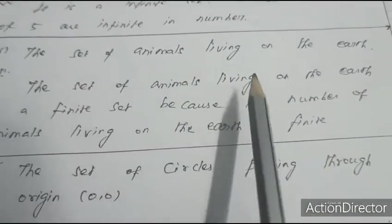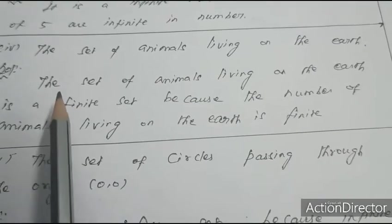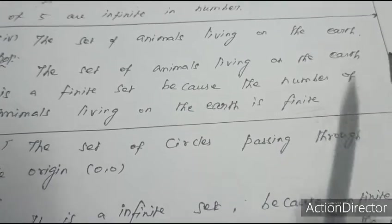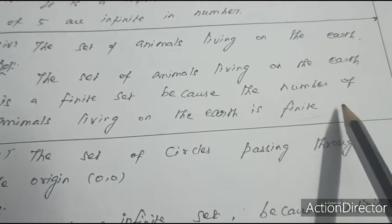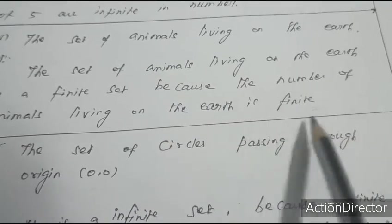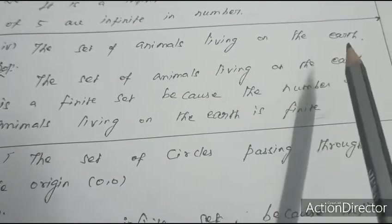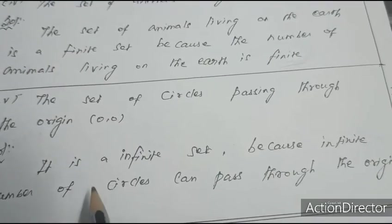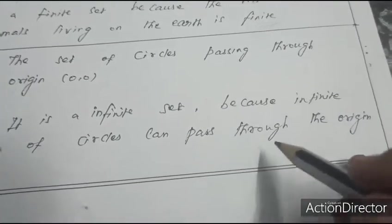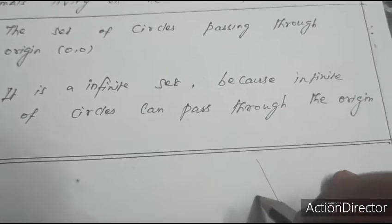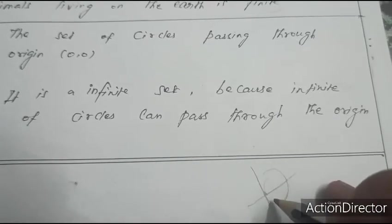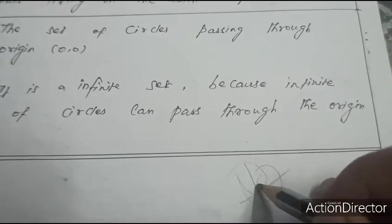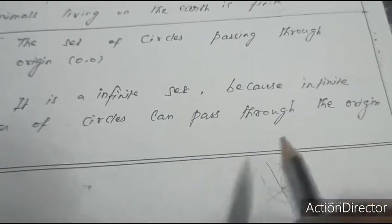Fourth question: the set of animals living on the earth — it is a finite set because the number of animals living on earth is finite, even though it is a very large number (in lakhs). Fifth question: the set of circles passing through the origin — it is an infinite set because an infinite number of circles can pass through the origin, with different radii (radius 2, 5, 6, etc.).